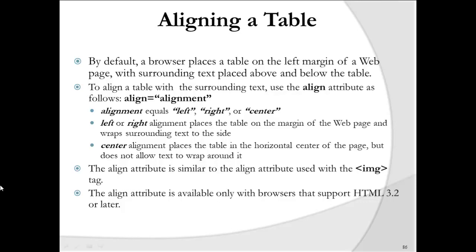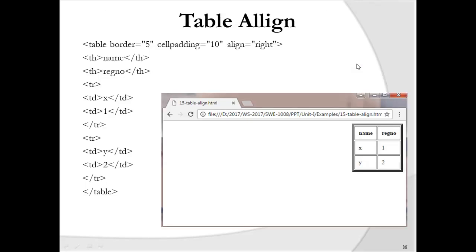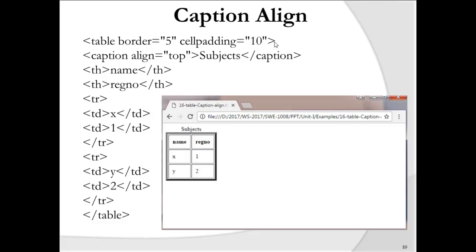To align a table, use the align attribute with values left, right, or center. The caption tag gives a heading for the entire table—unlike TH which titles individual columns, caption provides a title for the whole table and is displayed at the top.